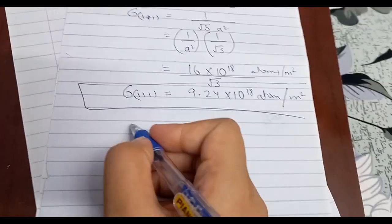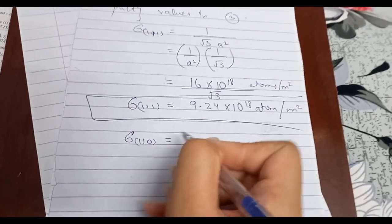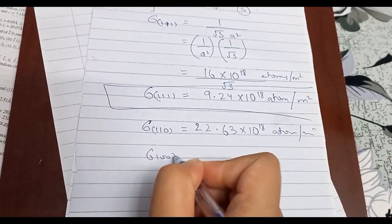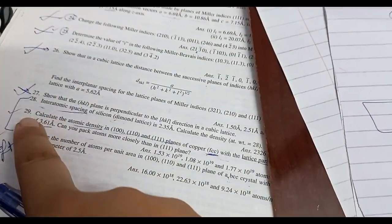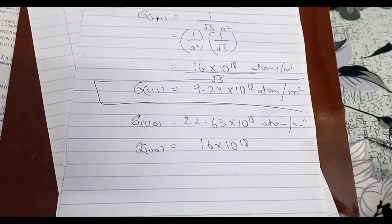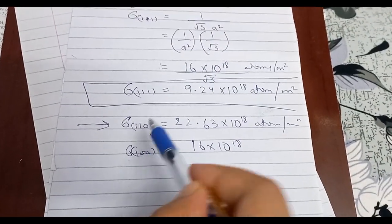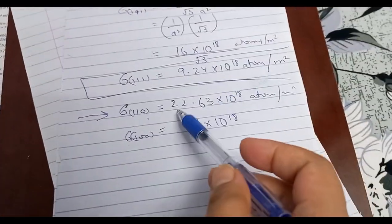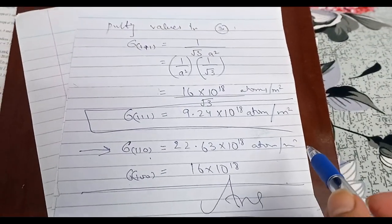Comparing the three results: σ₁₀₀ = 16 × 10¹⁸, σ₁₁₀ = 22.63 × 10¹⁸, and σ₁₁₁ = 9.24 × 10¹⁸ atoms per meter squared. In FCC, the 111 plane had the highest planar density, but here in BCC the 110 plane has the greatest density while 111 has the least — exactly opposite to FCC. That's an interesting comparison.